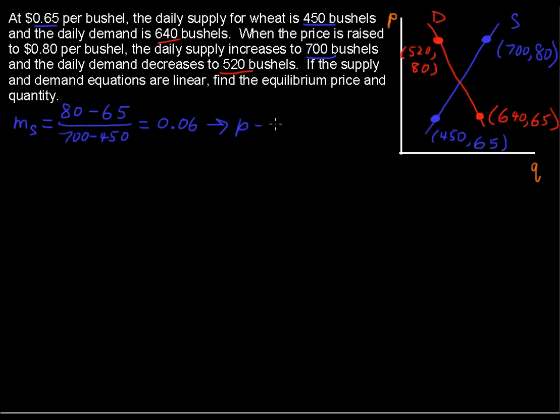So change in y over change in x, or in this case change in price over change in quantity. And that is going to equal 0.06. That gives us an equation of p minus p sub 1. We're going to use this point, so p minus 65 equals the slope, 0.06 times q minus 450. That is the supply equation.